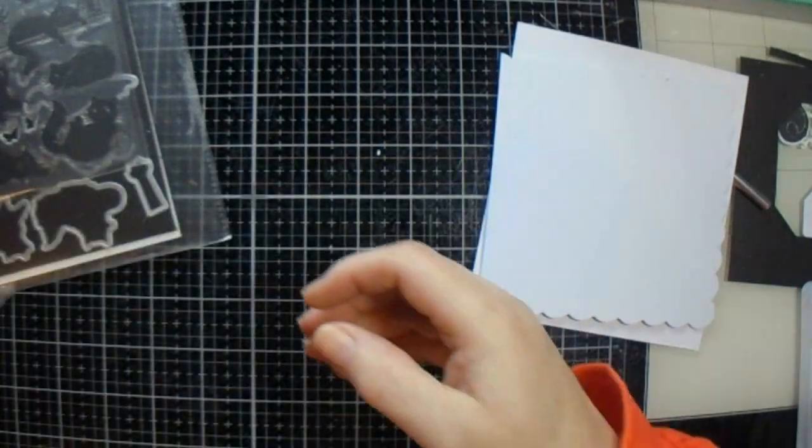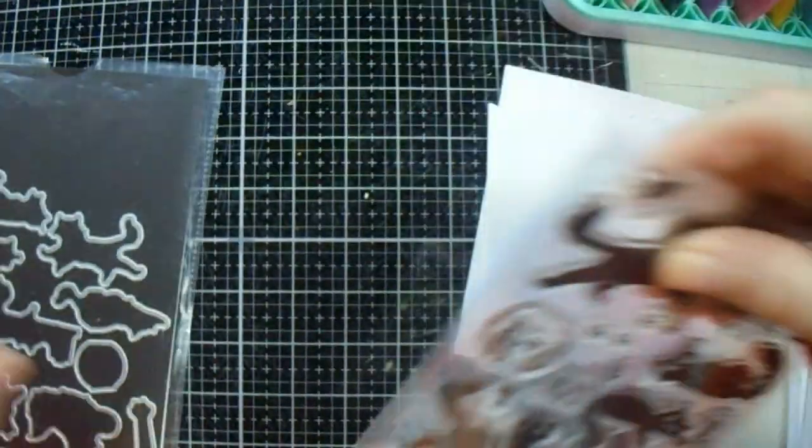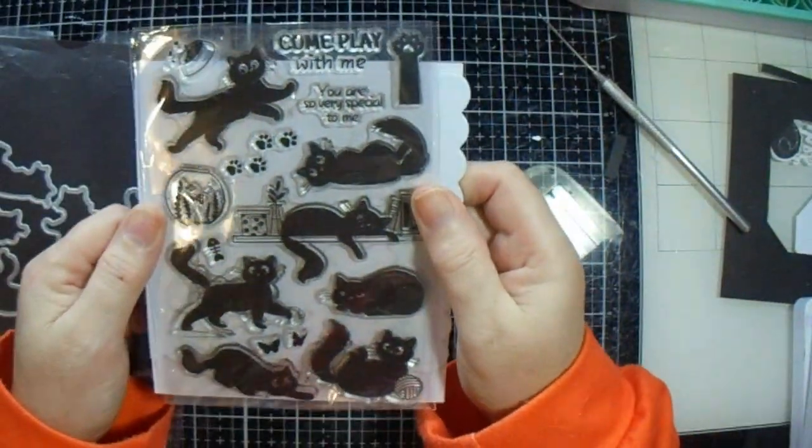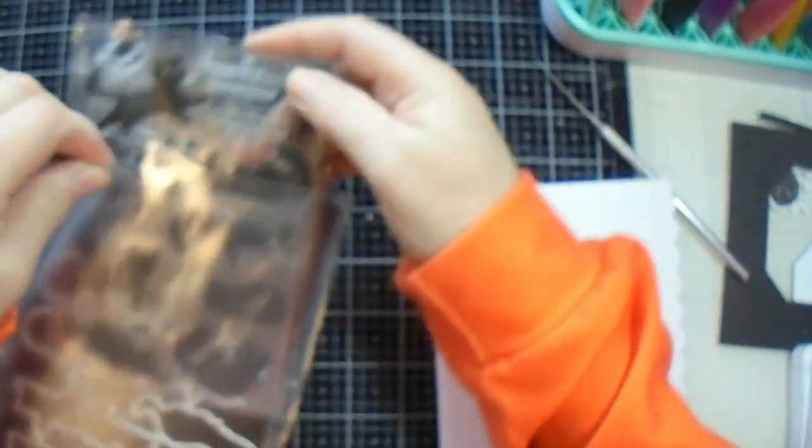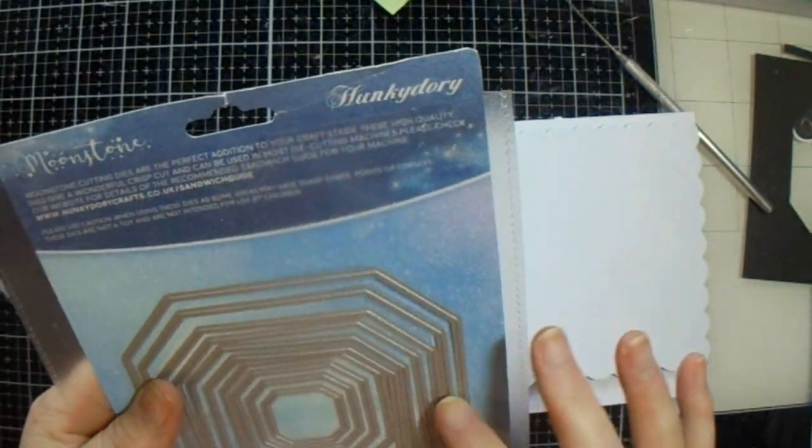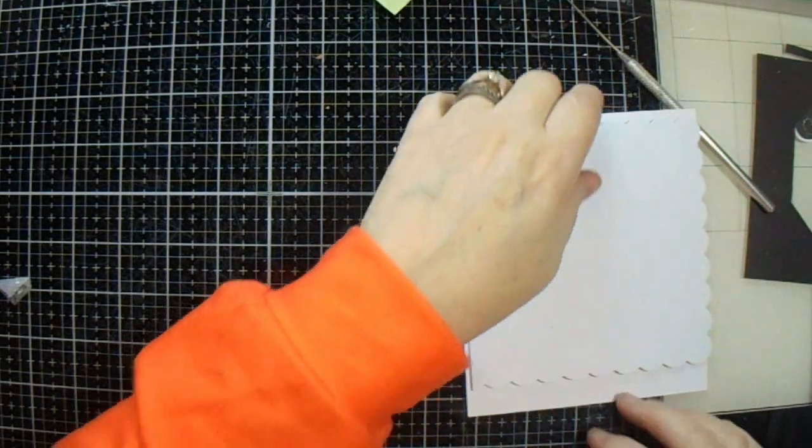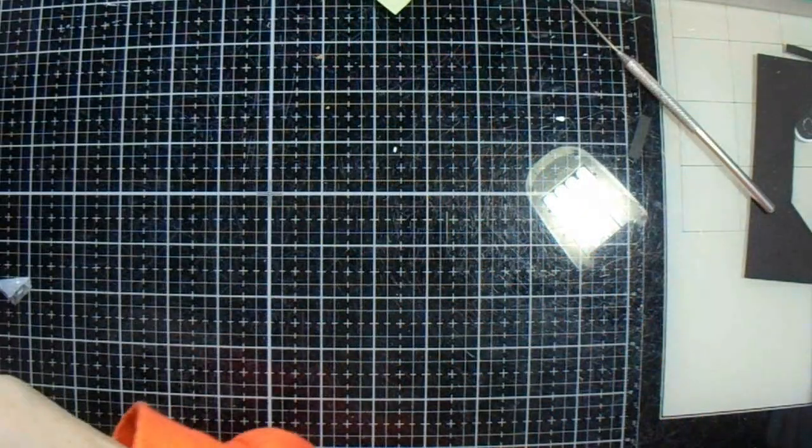I bought this stamp and die set from Amazon, and it's got kitty cats on it. I used these shaped dies to cut my sheets. Now I'm trying to keep an eye out because Fluffy keeps trying to get on my seat every time I stand up.